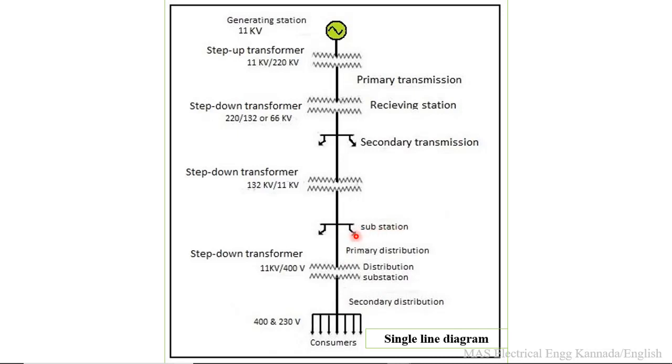Otherwise, this line will be carried to the distribution substation. Here also, a step-down transformer is there. We step down 11 KV to 400 voltage or 230 voltage single phase. This voltage is directly given to consumers like homes, small offices, or small commercial users.